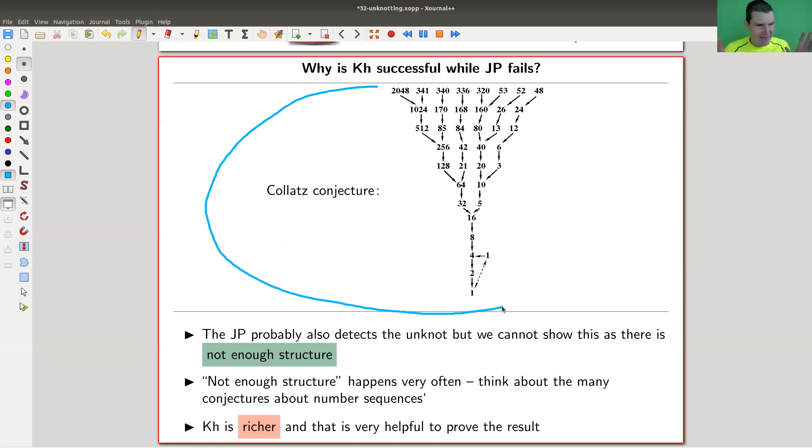It probably detects the unknot, it probably can solve the problem for you, but there's not enough structure to do it. It's too simple in some sense. Khovanov homology does the job, because Khovanov homology is richer. There's a lot of structure, there are vector spaces around, linear algebra around, and all that kind of stuff. Khovanov homology can do the trick because it's more complicated, you can prove something about it.